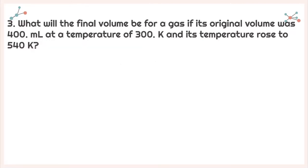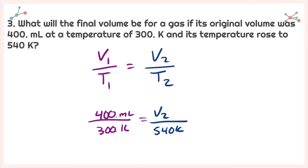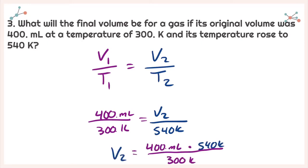For number three, it says what will be the final volume of a gas if its original volume was 400 milliliters at a temperature of 300 degrees Kelvin, if its original temperature rose to 540 degrees Kelvin. I'm just going to write down Charles' Law: V1 over T1 is equal to V2 divided by T2, and plug in to see what I need to solve for. I need to solve for V2. Isolating for V2, I get V2 equals 400 milliliters times 540 degrees Kelvin divided by 300 degrees Kelvin, giving me a final volume of 720 milliliters.